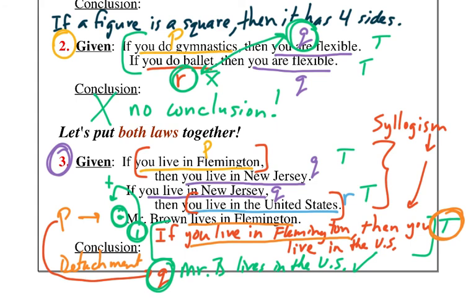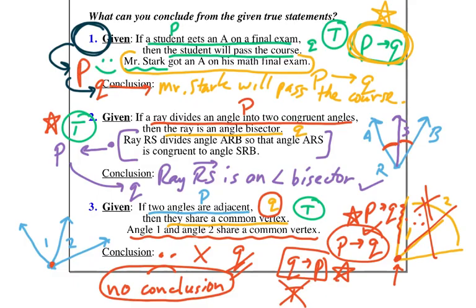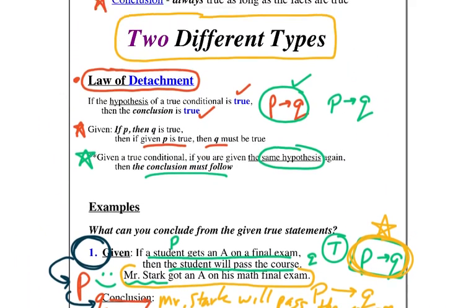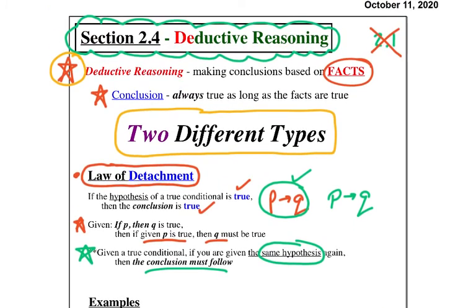That is deductive reasoning, and that's how we're going to be doing proofs — if you see a geometric figure and observe something, by either law you can draw a logical conclusion. Hopefully your brain is doing okay! Great job in section 2.4, friends — I'll see you next time.